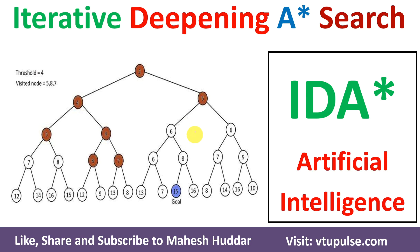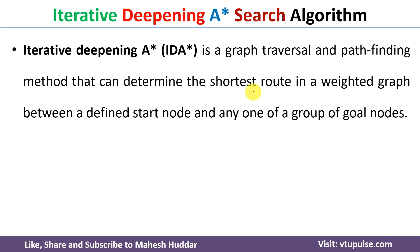Welcome back. In this video I will discuss the Iterative Deepening A* search algorithm in artificial intelligence with the help of a simple solved example. Iterative Deepening A*, also known as IDA*, is a graph traversal and path-finding method. It is used to determine the shortest path in a weighted graph between the start node and any one of the goal nodes.